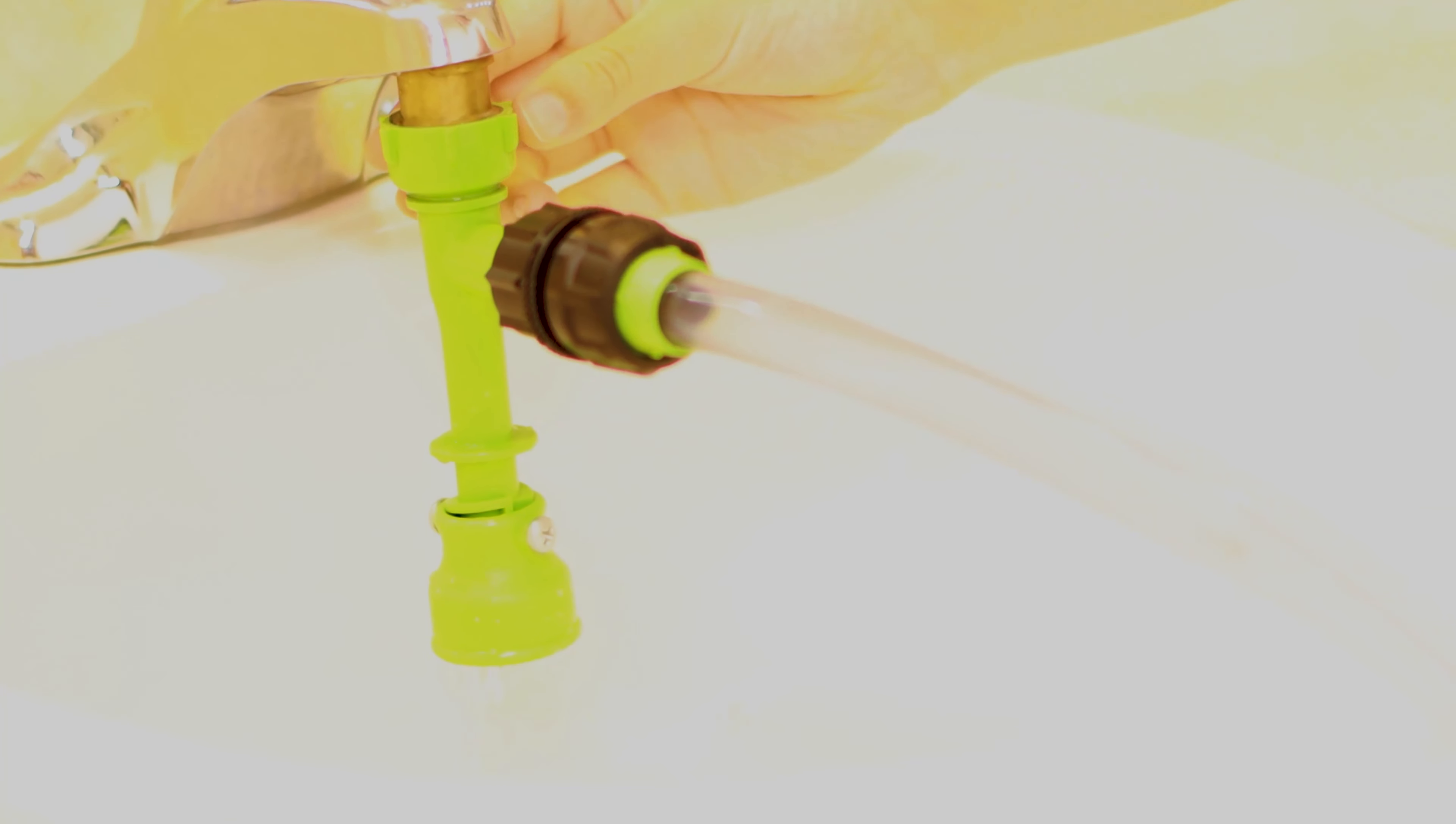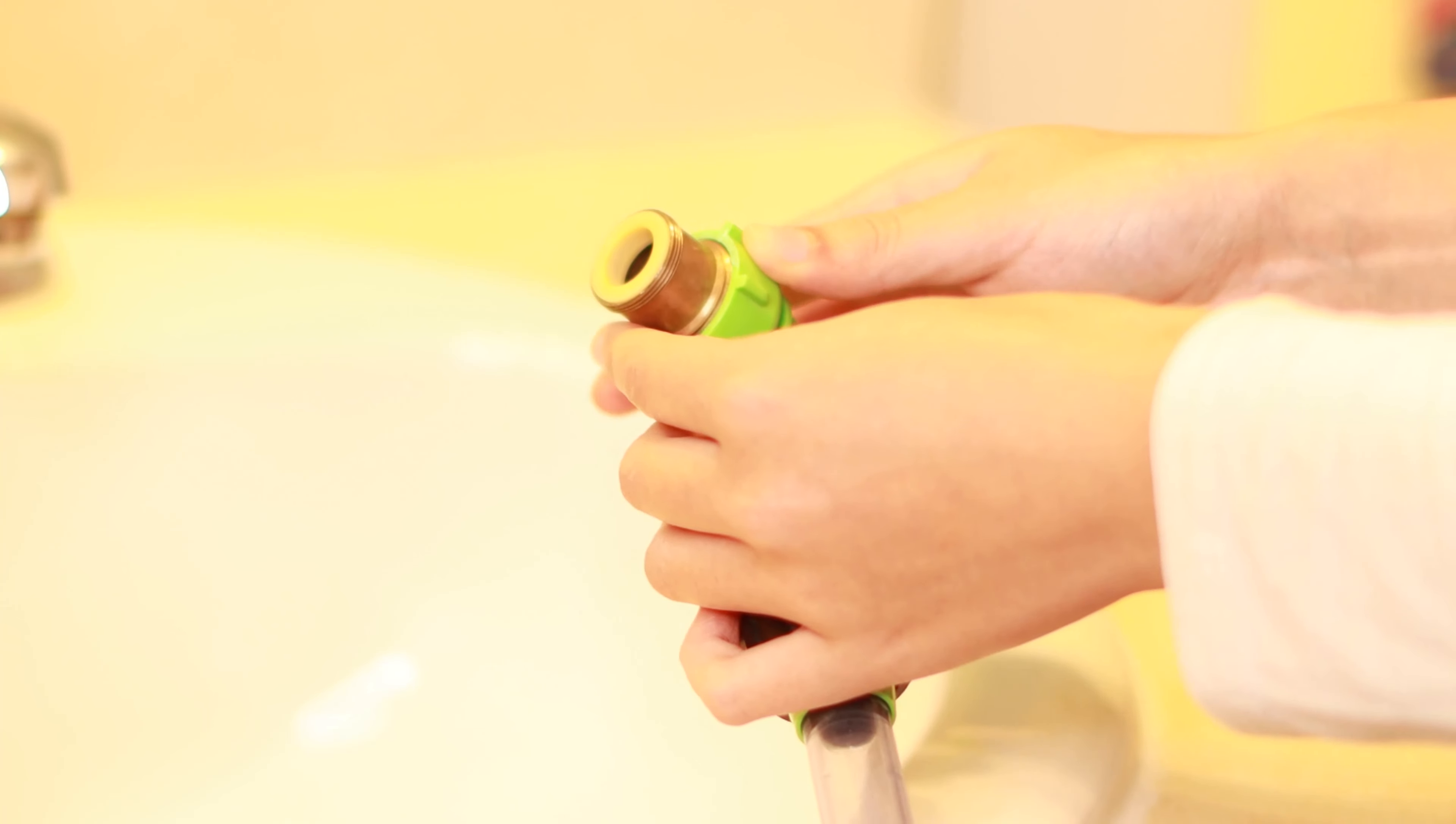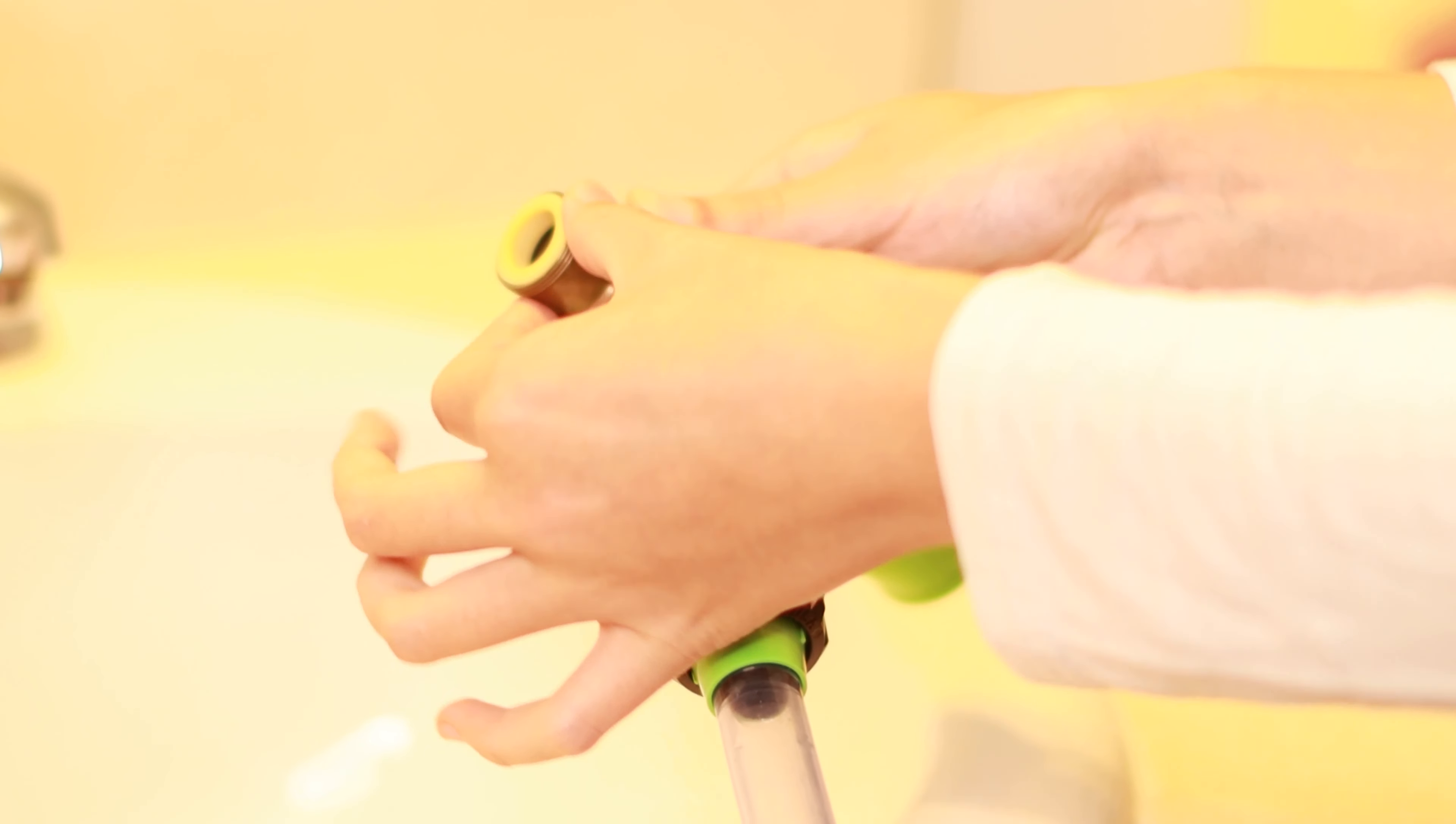Then unscrew this and unhook—well, not unhook—unscrew this and this. Reattach it so you will not lose it. And then make sure you put the part of your sink back.